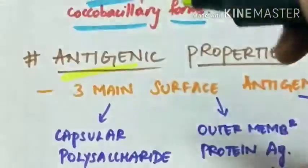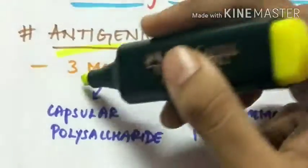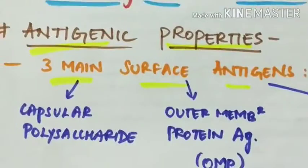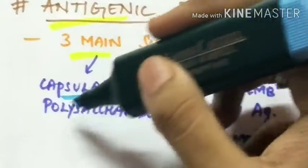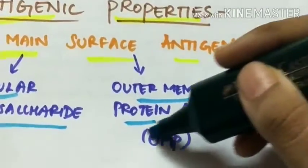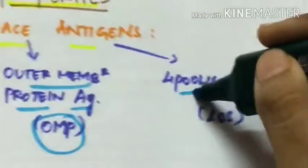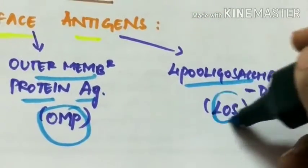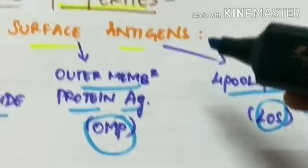Coming to its antigenic properties. There are three main surface antigens. They are capsular polysaccharide, outer membrane protein antigen OMP and lipooligosaccharides LOS.